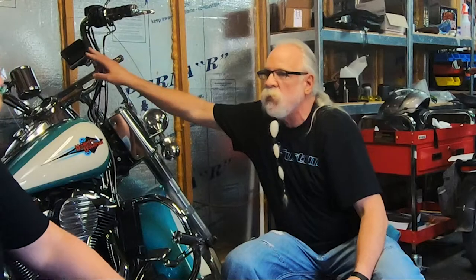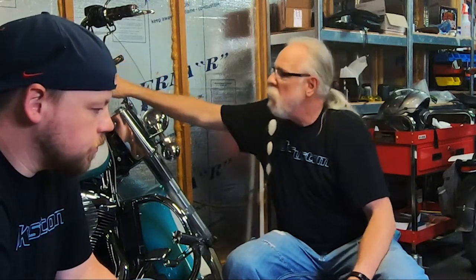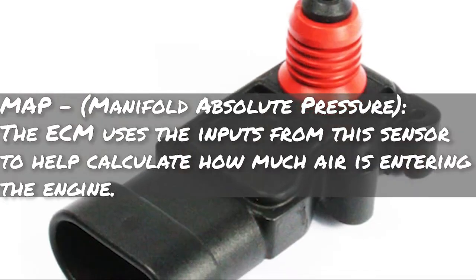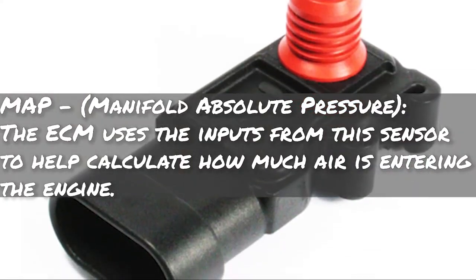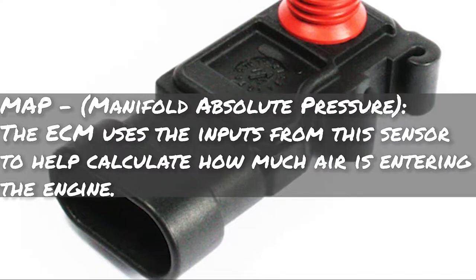The MAP — and this is where it can get confusing. Everybody says 'what MAP do you have in your bike?' meaning what tune do you have. But there's another acronym in the tuning world: MAP, M-A-P, stands for Manifold Absolute Pressure. For those of you with Power Visions who can monitor different things on your bike, that's one thing I always have up showing — my manifold air pressure. The ECM uses input from this sensor to help calculate how much air is entering the engine, so it knows how much fuel to put in.